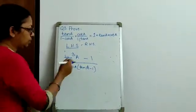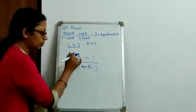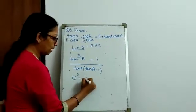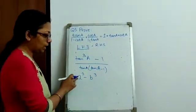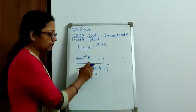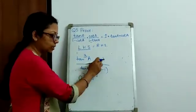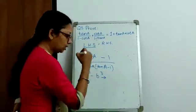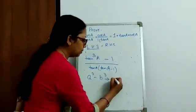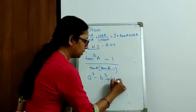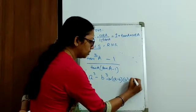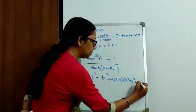Now, we look at the numerator. The numerator is of the form A cube minus B cube, where A is tan A and B is 1. So, 1 cube is 1 and tan A cube is tan cube A. Further, A cube minus B cube can be written as A minus B into A square plus B square plus AB.